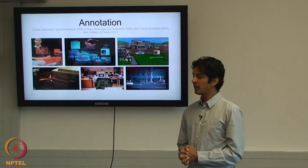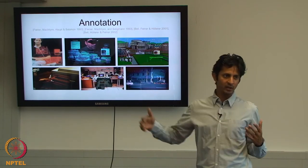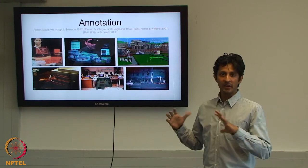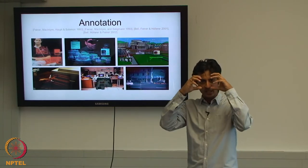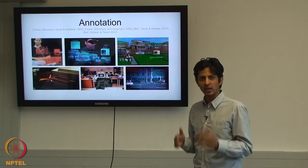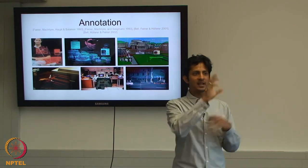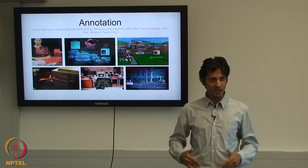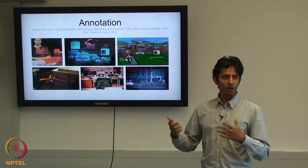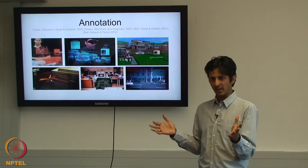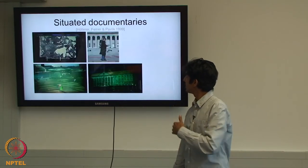Early AR applications include Columbia University's 'touring machine' from the early 90s — a geo-registered 3D model of the world combined with a GPS antenna in a backpack, a computer in the backpack, and AR glasses. As you walked around, it knew your exact position and orientation and labeled the real world with annotations. It could also play back documentaries or historical events at the specific scene where they happened, allowing you to relive history as a bystander.